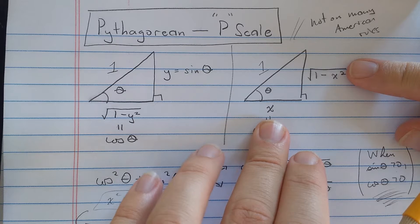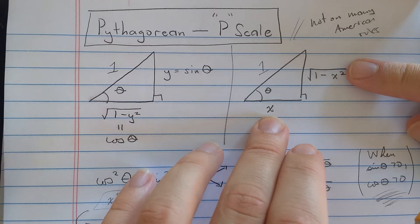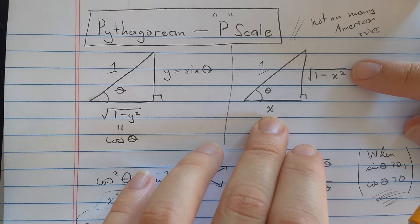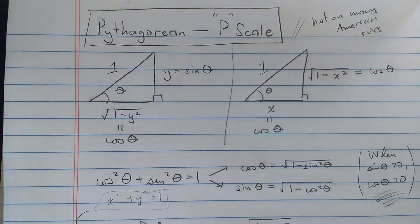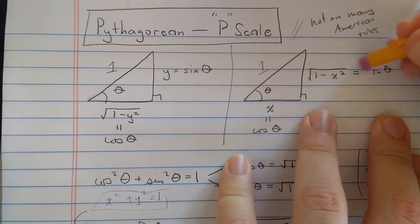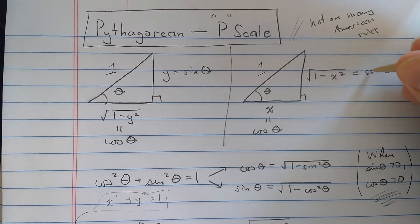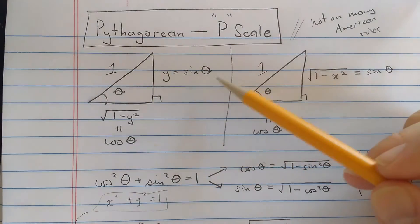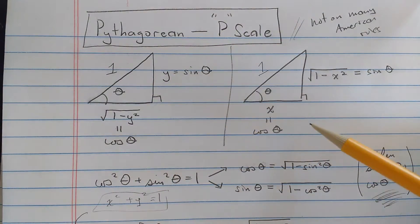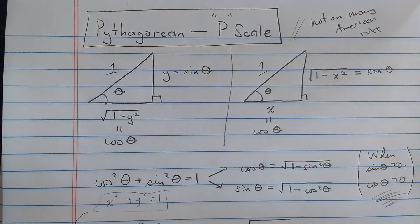The interesting thing is, forget the trigonometry, I just label that side y, then using the Pythagorean theorem, the other side is length square root 1 minus y squared. If I start with the bottom side and label it length x, then this side is length square root 1 minus x squared.